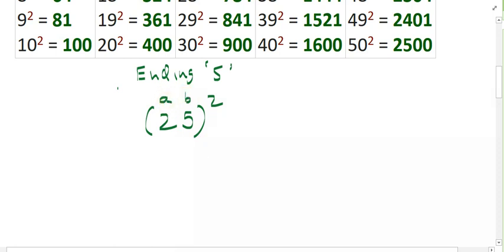So first you do B square. B square, that is 5 square. So you get here 25. So 5 square is 25.